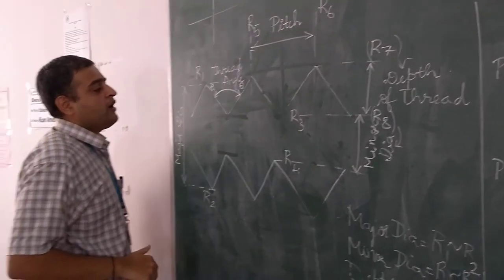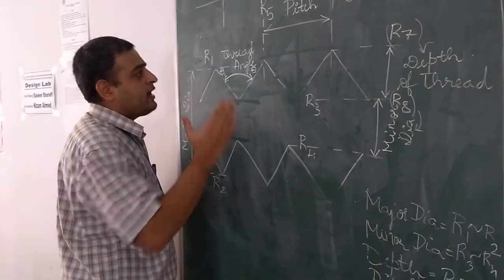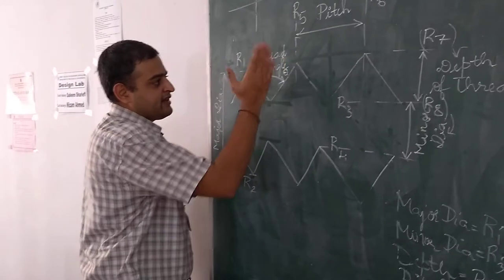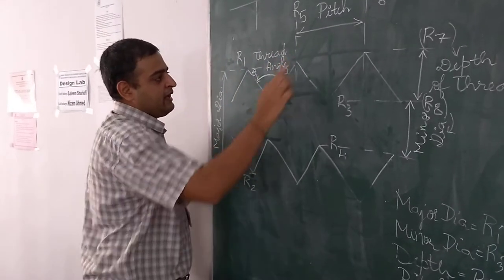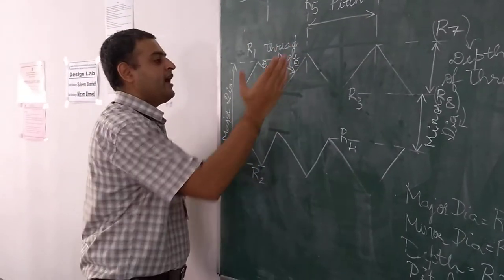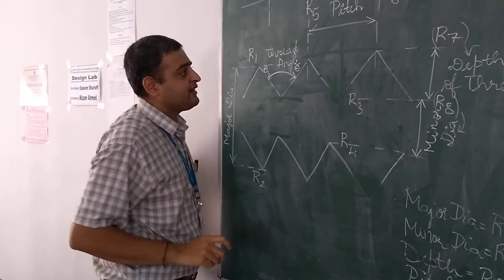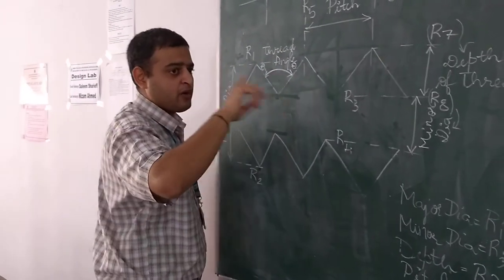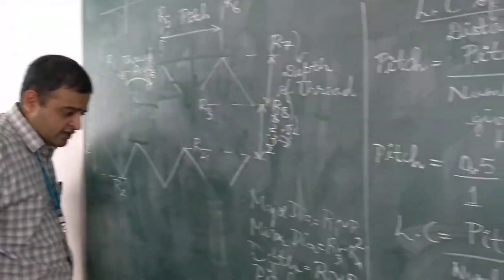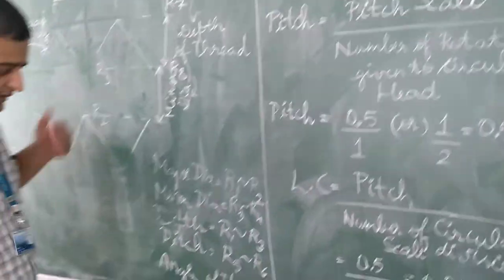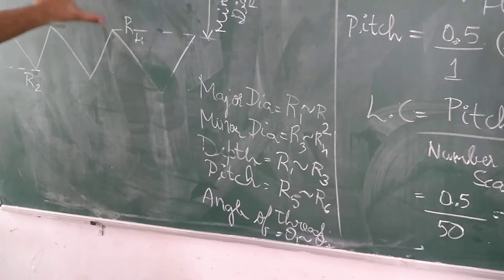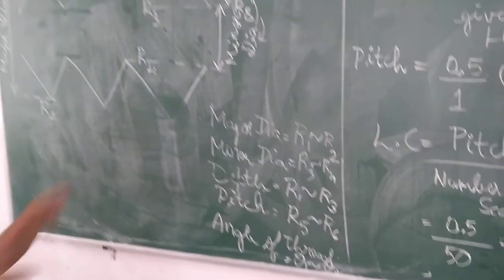There is also a circular scale to calculate the thread angle. The cross wires can be made coincident with the thread flanks, and you can calculate the thread angle on the circular scale provided on the optical projector. These are the important parameters and formulas, and using this diagram we can relate them.